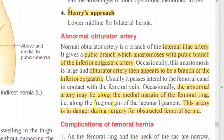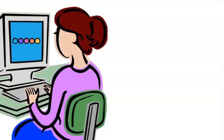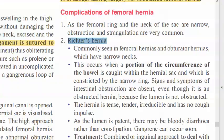The abnormal obturator artery passing along the free margin of the lacunar ligament is in danger during surgery for an obstructed femoral hernia. This is a key surgical hazard to remember.